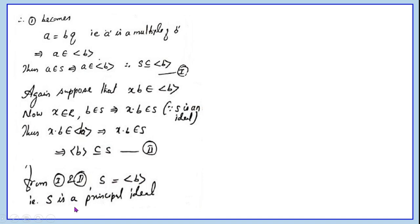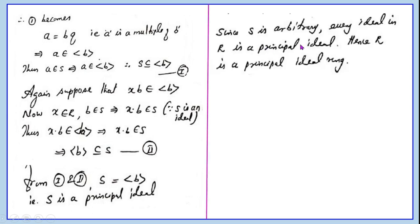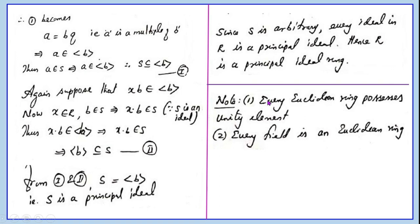Therefore S is a principal ideal. Since S is an arbitrary ideal, every ideal in R is a principal ideal. Hence R is a principal ideal ring. Note: every Euclidean ring possesses a unity element, and every field is a Euclidean ring.